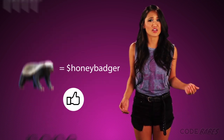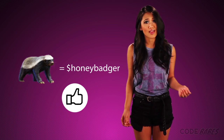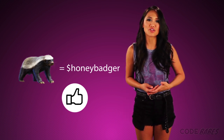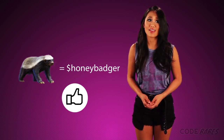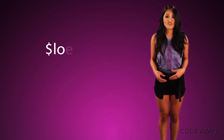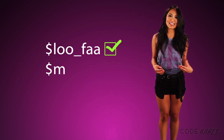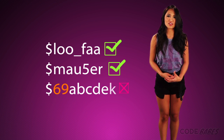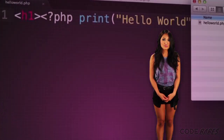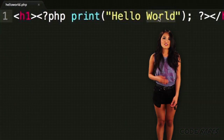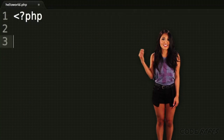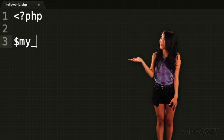And if you have to look back at your code in a few months, you'll probably think the same thing. Variables can contain letters, numbers, and underscores, but cannot start with a number.